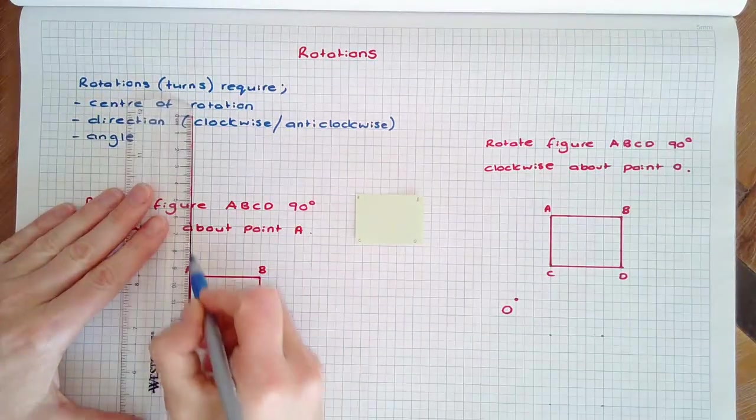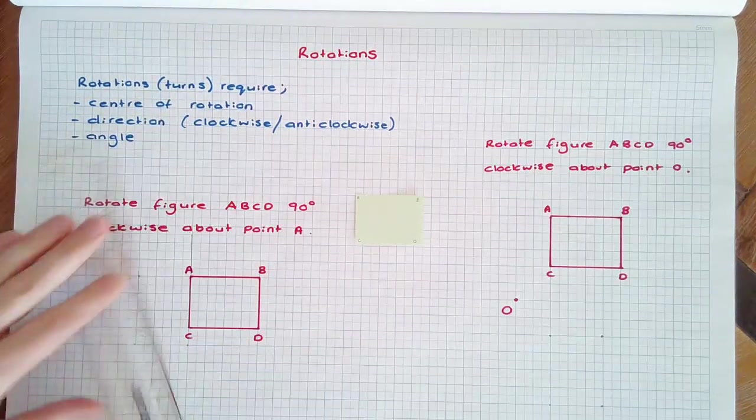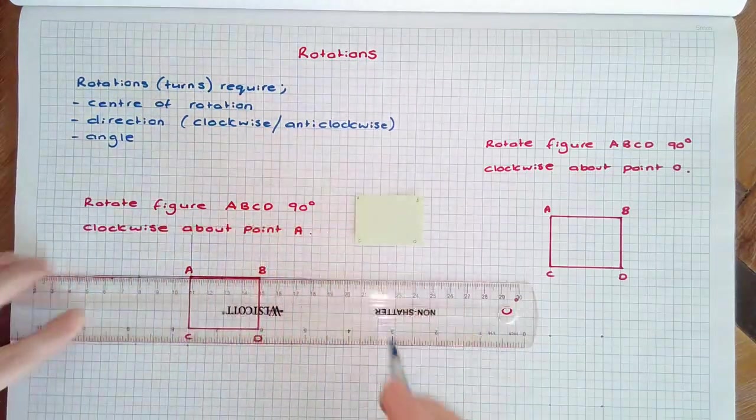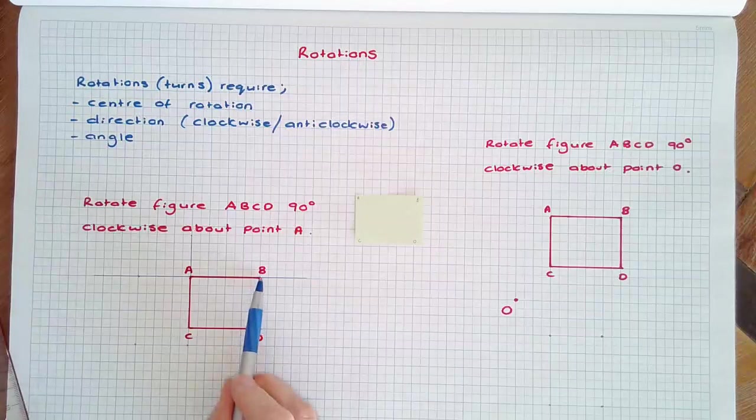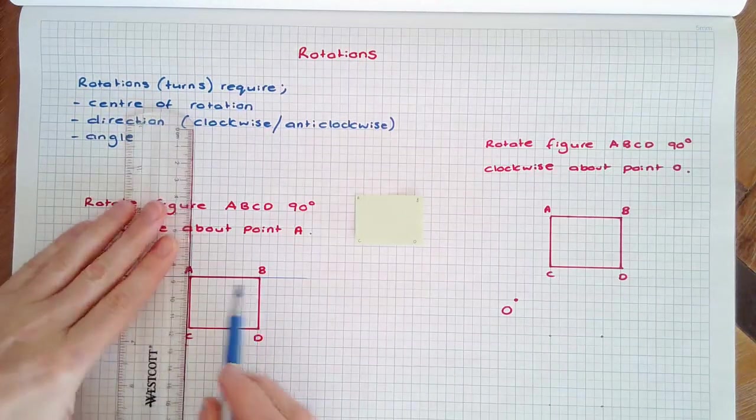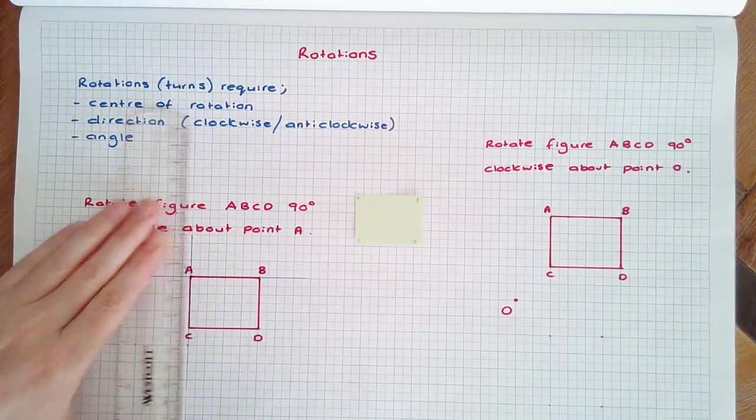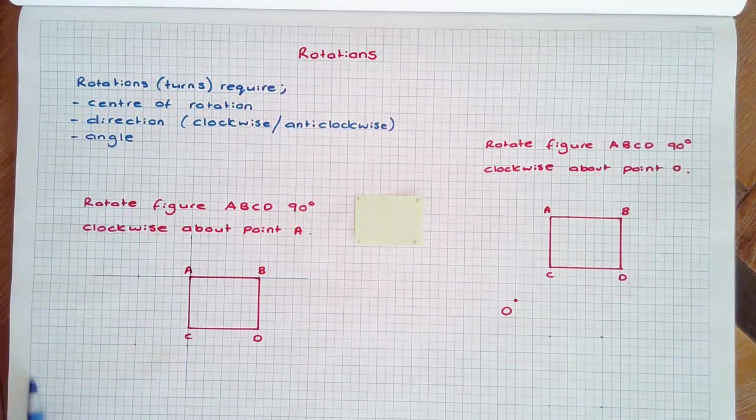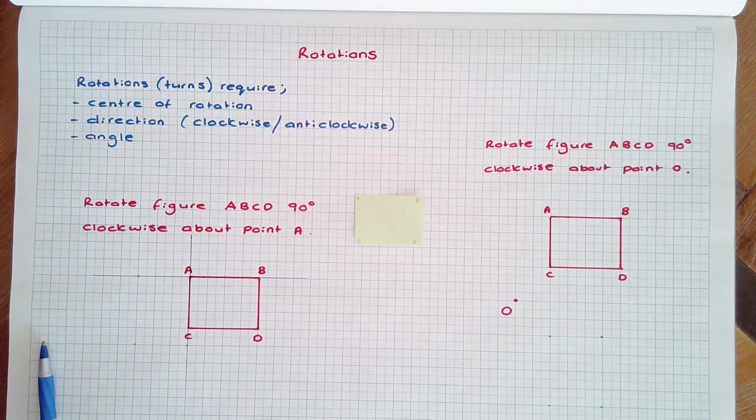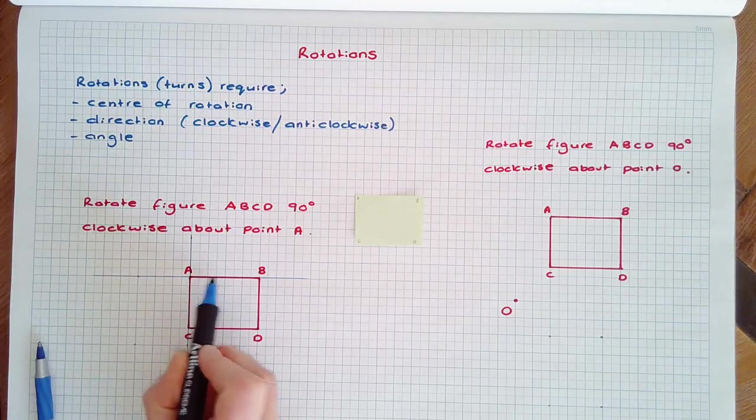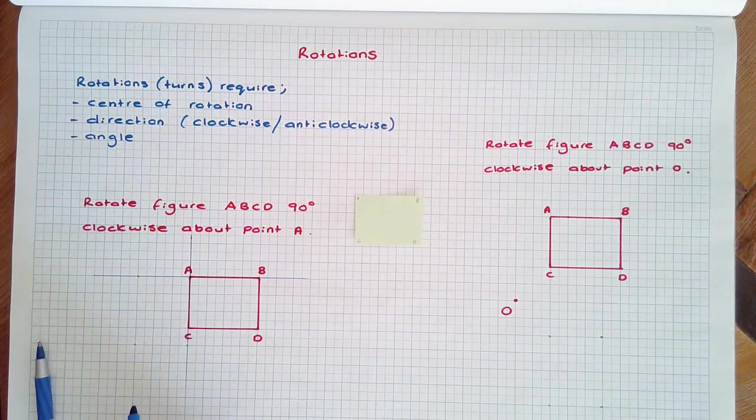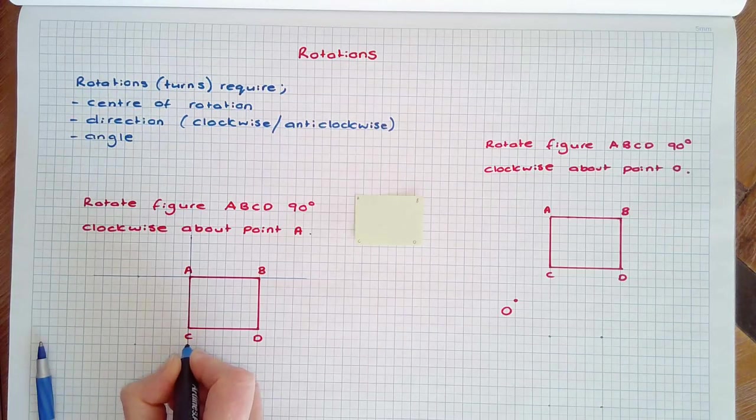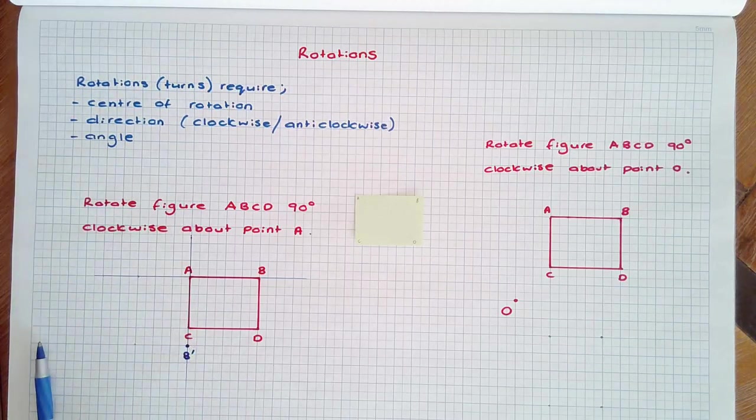So using point A as our fixed point, starting with B, if I rotate B 90 degrees clockwise, I can see that it will come down and form on this line. It needs to be the same distance from A, 1, 2, 3, 4, in the new image. 1, 2, 3, 4. So B' will be located here.